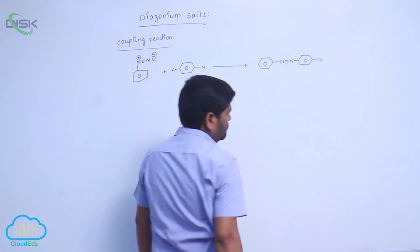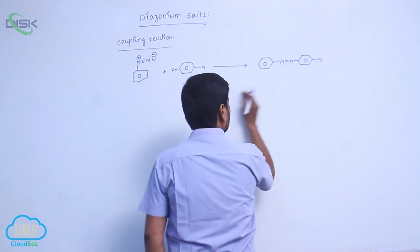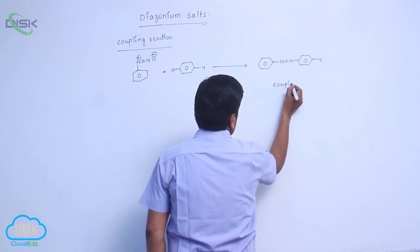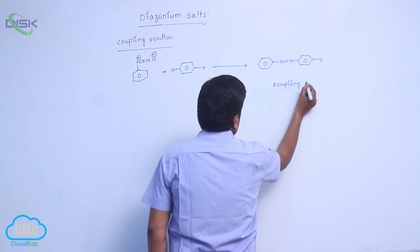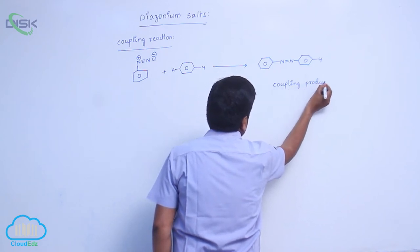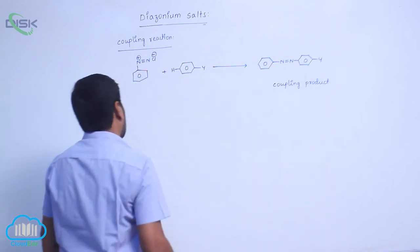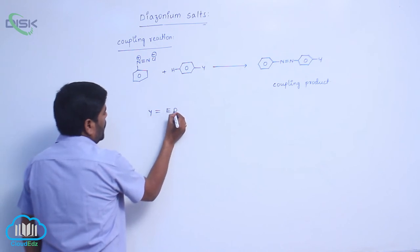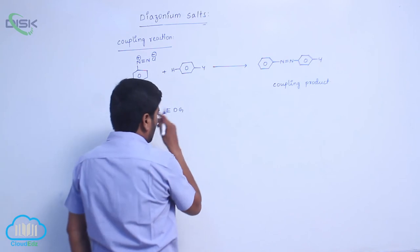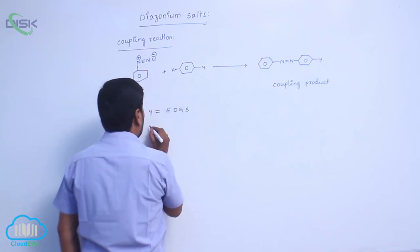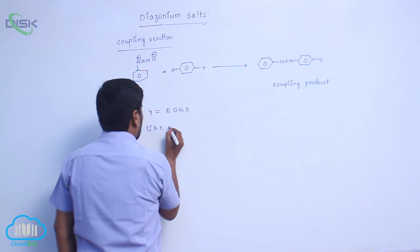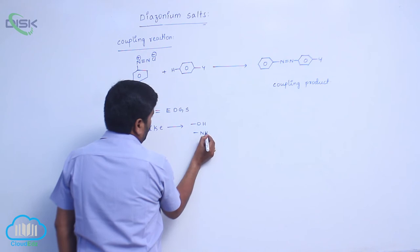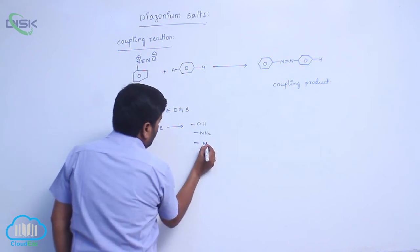Here is what Y. It is a coupling product. Here Y equals electron donating groups, like OH group, NH2 group, NHR, NR2, etc.